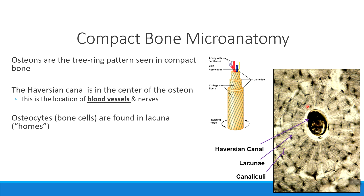Around those Haversian canals, we see all of these smaller black dots. These smaller black dots are individual osteocytes, which are bone cells. Because everything around these cells is filled with calcium and collagen, we have to have a special space — a home — for those bone cells to live. Those homes are called the lacuna. So the spaces we're seeing on compact bone tissue are the lacuna where the osteocytes are found inside.